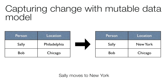Let's look at a simple example. Let's say you're keeping location information on people. In a mutable data model you would have two columns — one for the person and one for a location. So Sally lives in Philadelphia and Bob lives in Chicago. When Sally moved to New York, you would find the cell corresponding to Sally's location and update it to New York instead of Philadelphia. This is pretty standard practice.